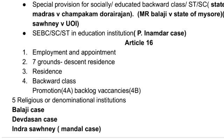Clause 2 adds 7 grounds on which you will not discriminate — the same 5 grounds as in Article 15 plus descent and residence — so in these 7 grounds, the state will not discriminate in employment and appointment. Clause 4 provides that the state may make provisions for reservation of appointments or posts in favour of backward classes. The question of how many posts will be reserved was addressed in the Balaji case, which decided that these classes must be socially and educationally backward and that others without adequate or proportional representation can be reserved for. In Devdasan case, a 50% ceiling limit on reservation was established. In Indra Sawhney, also known as the Mandal case, 27% reservation was affirmed for backward classes, but it was said that reservation shall not be given in promotions, and the 50% ceiling shall not be exceeded.